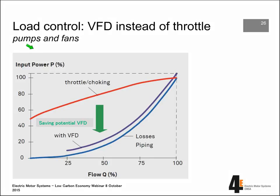An example for load control: starting at 100% flow and 100% input power, when you want to lower the flow to 50%, using a throttle you end up at 80% of input power. But using a VFD, you follow the system characteristic curve and end up at 50% flow with only 20% input power — saving 60% of energy. So for pump and fan systems, applying a VFD is very worthwhile when you want to adjust demand.